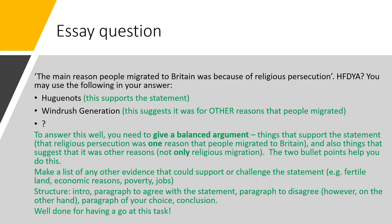Huguenots did migrate to Britain because of religious persecution, so you could write a paragraph about them. But then you're given another bullet point about something that's not to do with religious migration — something that challenges the statement — and this example is the Windrush generation. People from the Caribbean didn't move to Britain because of religious persecution; they moved for other reasons. Then you need to come up with one bullet point of your own, which is why there's a bullet point with a question mark.